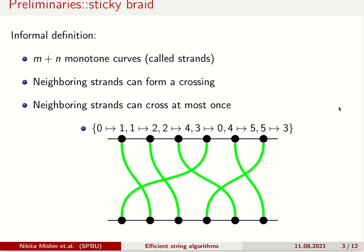Here is some brief intro to the object called sticky braid. Formally a sticky braid is the monoid with n plus n minus 1 generators and some rewriting rules. But we are more interested in its informal visual representation. Visually, sticky braid is an object that consists of n plus n monotonic curves called strands. By default they are constructed from top to bottom and left to right. Neighboring strands can form crossings with each other at most once.